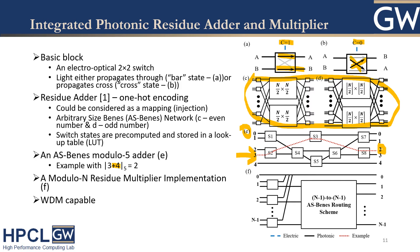For multiplication, it is very similar to addition. However, there is one special case to handle: multiplication by 0, which always results in 0. Thus, we use a 2×2 switch to route the zero-multiplier case to output port 0, and for the rest, we use an (N−1)-to-(N−1) Benes network routing. All these optical components are WDM-capable, which means we can run several operations at the same time.